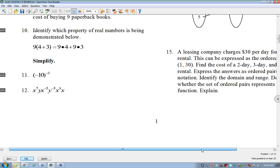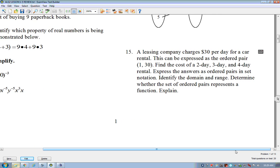School. Okay. A leasing company charges $30 per day for a car rental. This can be expressed as the ordered pair 1, 30, which basically means one day. Your input is one day. Your output is 30. Find the cost of a two-day, three-day, and four-day rental. Express your answers to ordered pairs and set notation. Identify the domain range. Determine whether the set of ordered pairs represents a function. So essentially what we can do is we can set up a table. All right. XY. One day, $30.